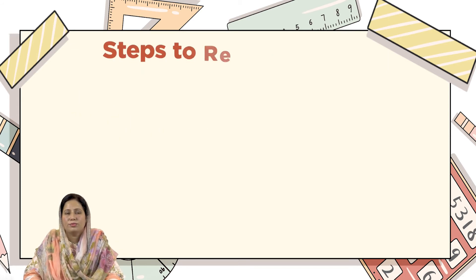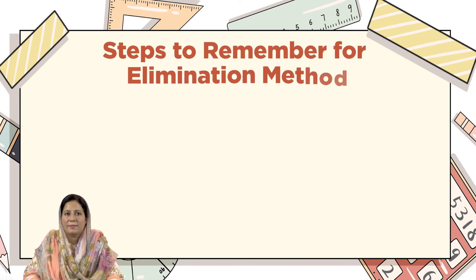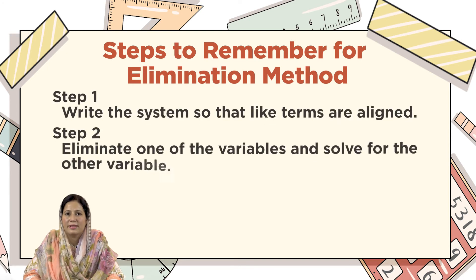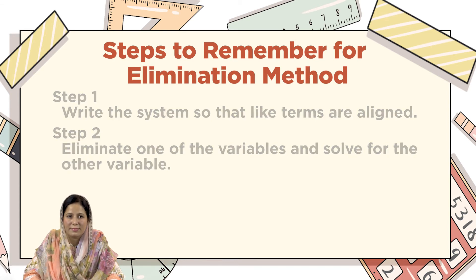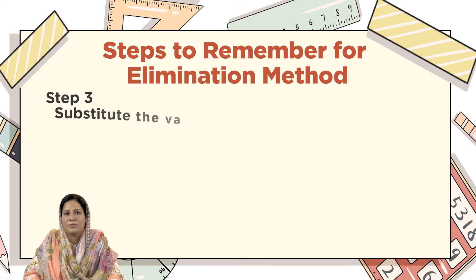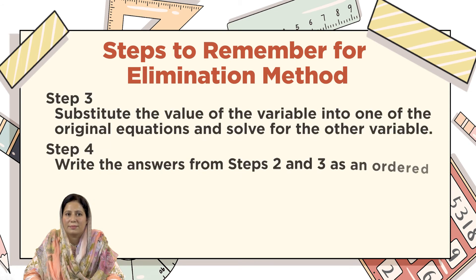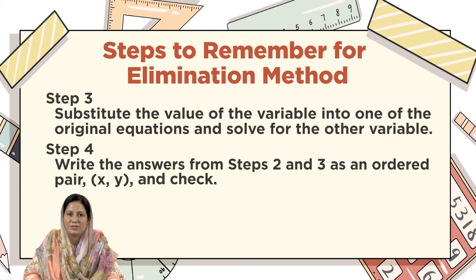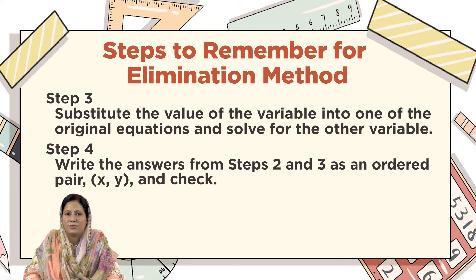Now it is time to remember the steps of the elimination method. Step 1: write the system so that like terms are aligned. Step 2: eliminate one of the variables and solve for the other variable. Step 3: substitute the value of the variable into one of the original equations and solve for the other variable. Step 4: write the answers from steps 2 and 3 as an ordered pair and check.